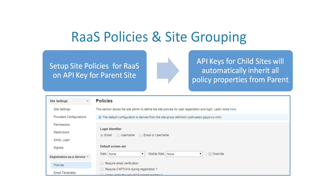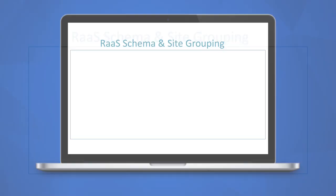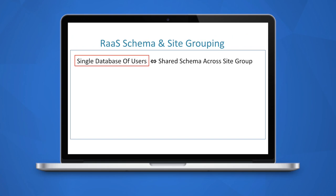The only exception to this rule is that email templates and basic plugin settings can be overridden by child API keys, either through the Admin Console or through an accounts.setPolicies call to the child API key.